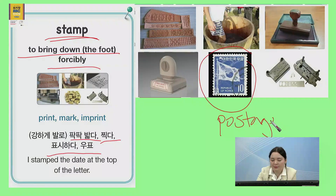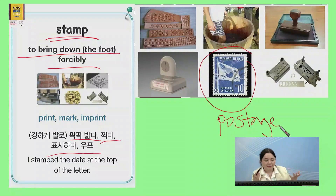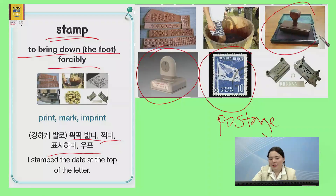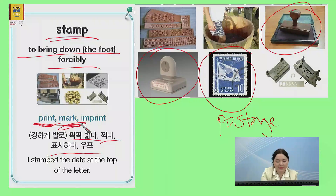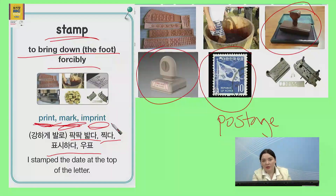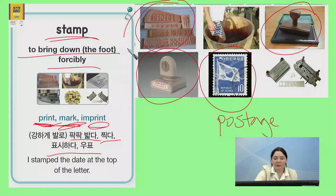Postage. Or it can be something you use to put a stamp on something — 찍는 stamp, 표시하는 stamp. So there's lots of different ways to use stamp. Stamp이랑 비슷한 말은 print, 찍다, 표시하다, mark, and imprint. All of these mean 찍어서 어떤 걸 남기는 거예요. That would be to stamp something onto something else.